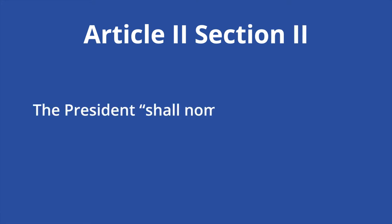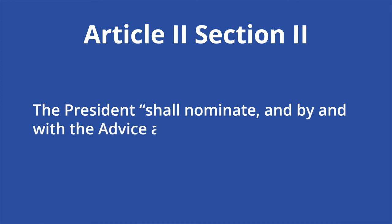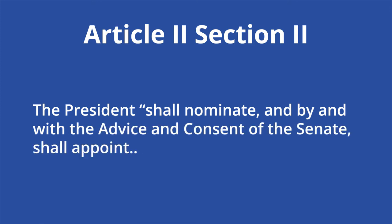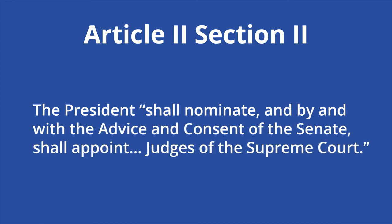Article 2, Section 2 of the United States Constitution states that the President shall nominate, and by and with the advice and consent of the Senate, shall appoint judges of the Supreme Court. There are no qualifications or requirements for Supreme Court Justices, but all past appointees have at least studied law. Once the President makes a nomination, the confirmation process begins.